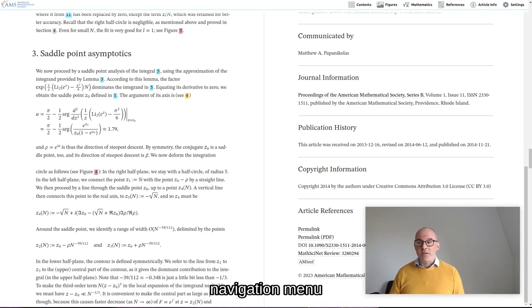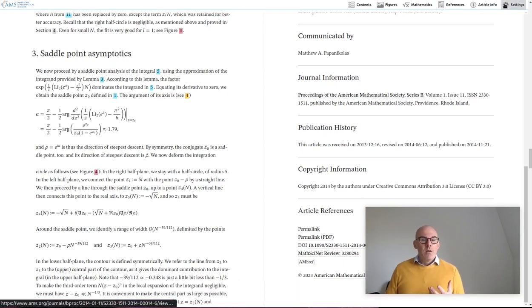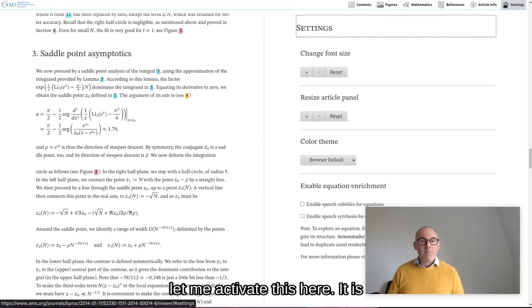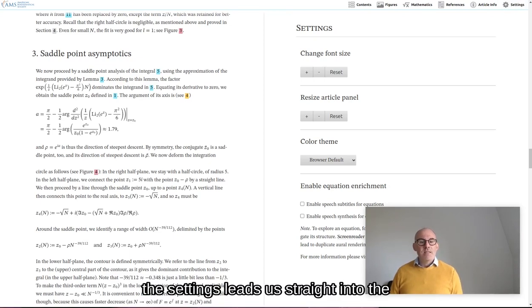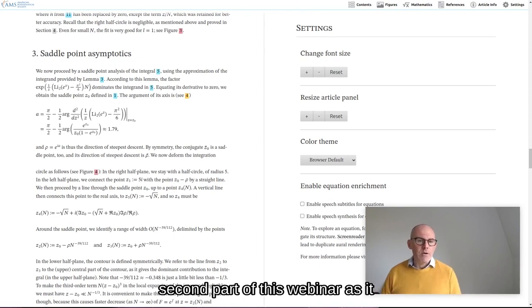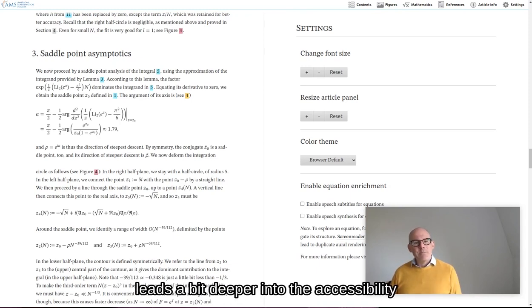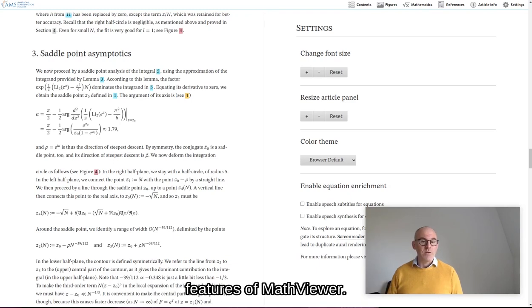Finally, at the very end of the navigation menu, you'll find a settings tab. Let me activate this here. It is only accessible by the navigation. The settings leads us straight into the second part of this webinar, as it leads a bit deeper into the accessibility features of MathViewer.